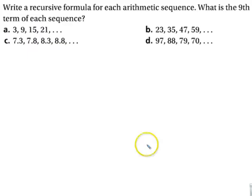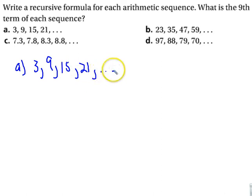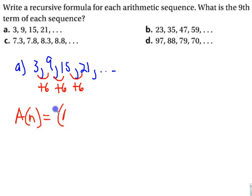All right, let's try the recursive. So let's just look at A together. And if you want to practice one of these other ones, that's great. We have 3, 9, 15, 21, and so on and so forth. So the common difference is plus six. So now here's a little bit of a shortcut. So a of n is equal to a of n minus 1 plus six. Because that's the common difference. That value goes right there. That's it. That's the recursive formula for that question.